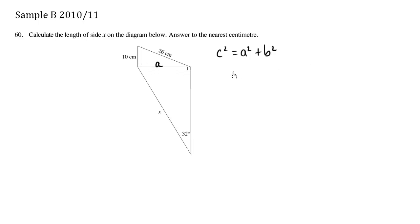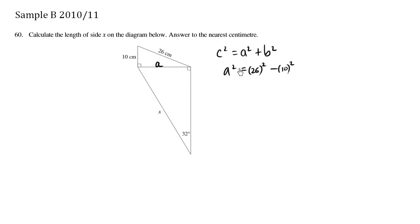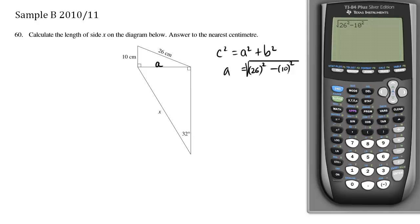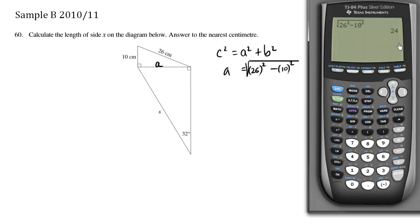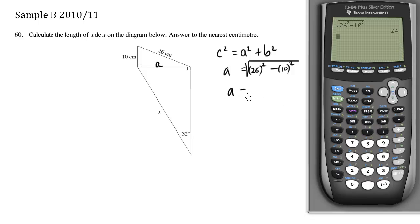So we have a squared equals c squared minus b squared. Our c is 26 and our b is 10. We can solve for a by taking the square root of both sides. The square root of 26 squared minus 10 squared equals 24. So a equals 24.